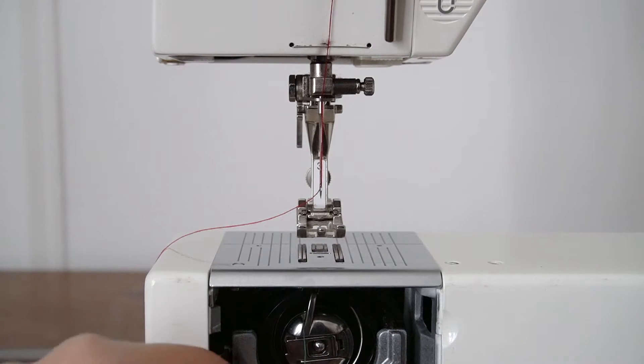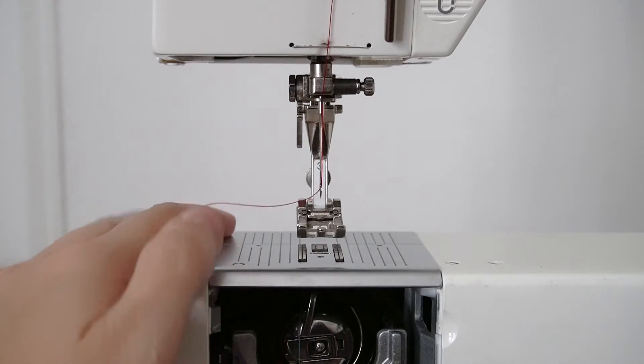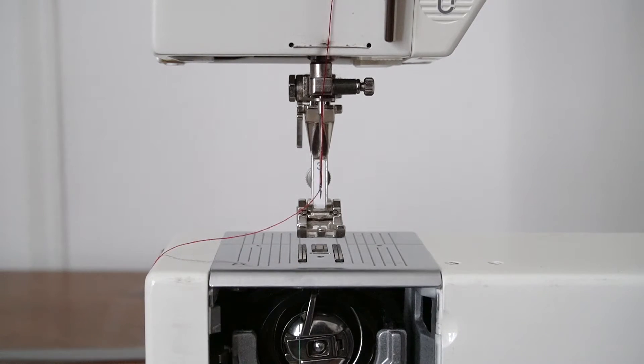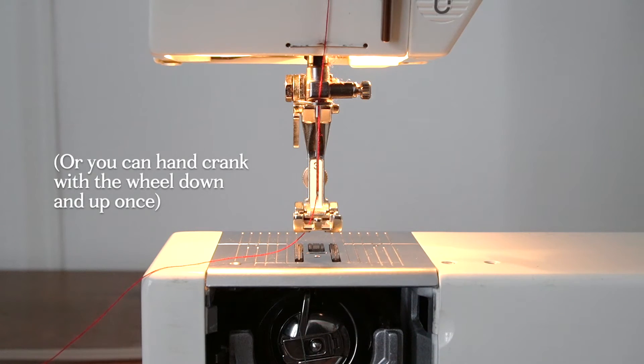The last thing you need to do is to get this bobbin thread up through the bobbin chamber up to the top of the plate. So to do that you'll need to turn your machine on, then push your foot onto the presser pedal to drop the needle down into the bobbin chamber and come back up just one time.